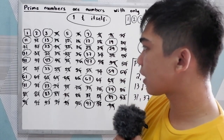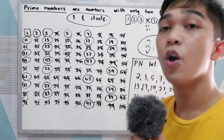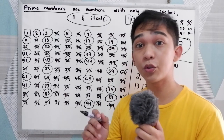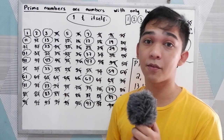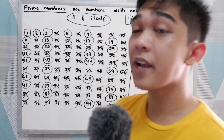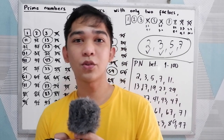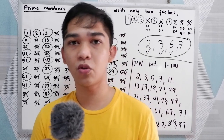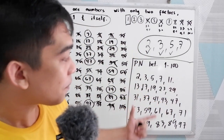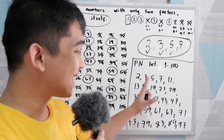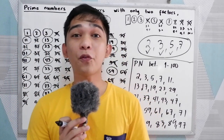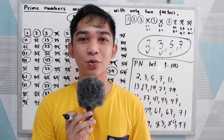All the numbers that we crossed out are the composite numbers — that means they have more than 2 factors aside from itself and 1. For our next lesson, we're going to discuss prime factorization, so you need to memorize or at least familiarize all these prime numbers. Thank you for watching, Senior Pablo TV.